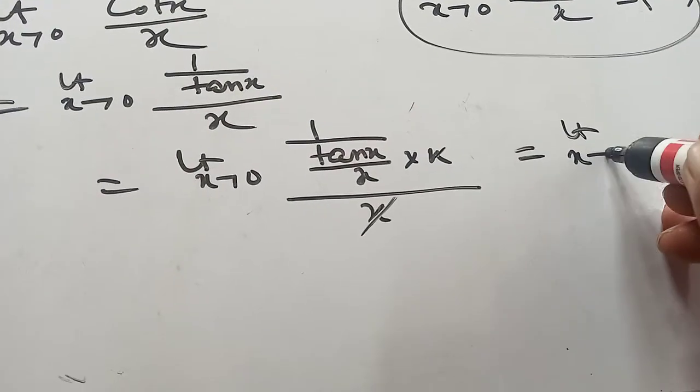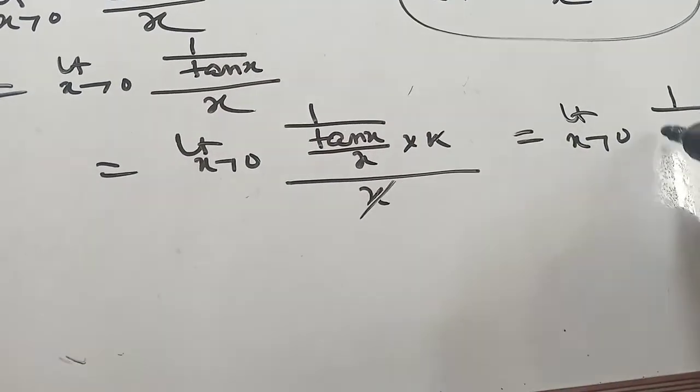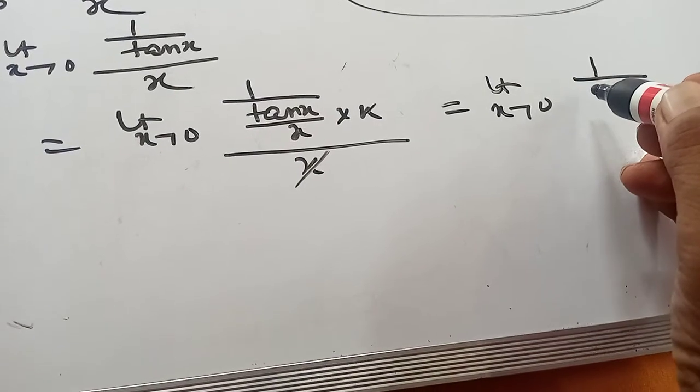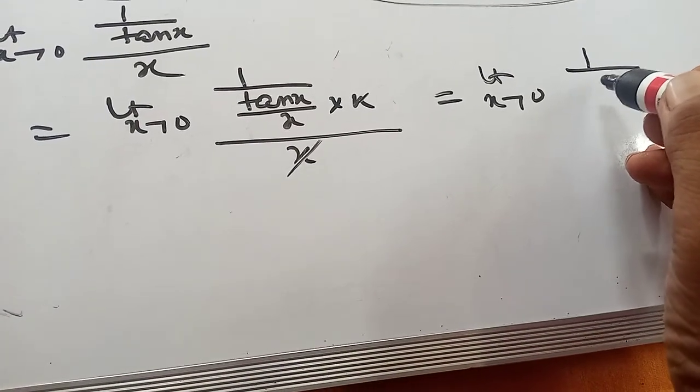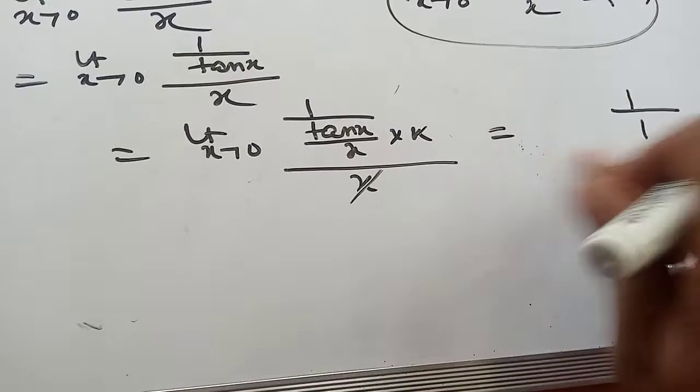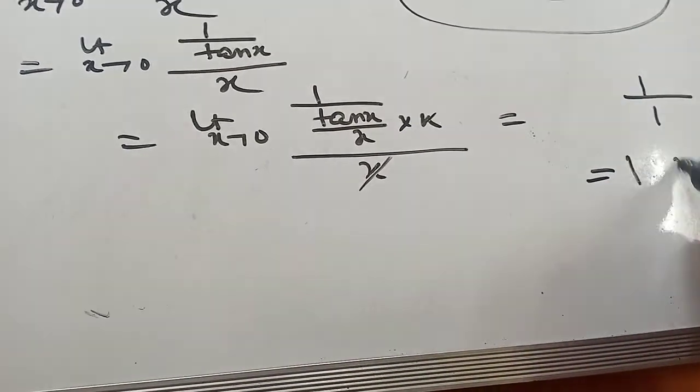Here you can write it: limit as x tends to 0, 1 by 1. 1 by 1, that means 1.